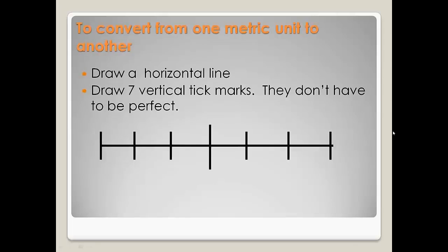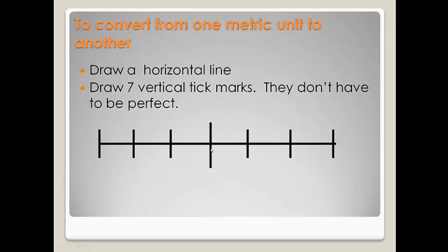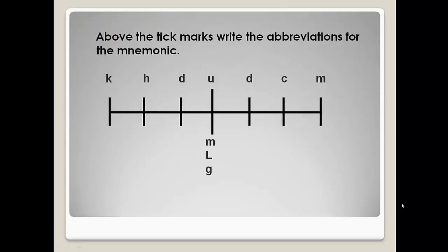When you're converting from one metric unit to the other, the first thing you want to do is draw a horizontal line. Just draw a line. It doesn't have to be perfect, it doesn't even have to be straight, it just needs to be there. And on the horizontal line, you're going to put seven tick marks, kind of like seven days of the week. That's how I remember how many to put. You'll notice that I make the one in the middle, the fourth one, larger. You don't have to, I do. But that's totally up to you.